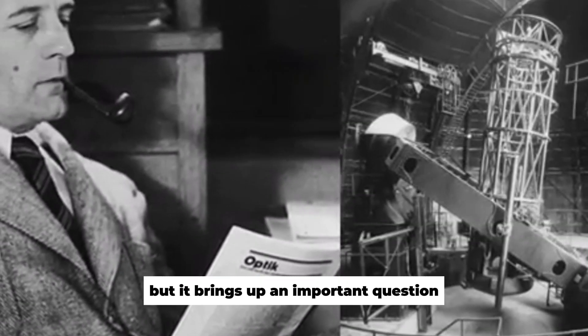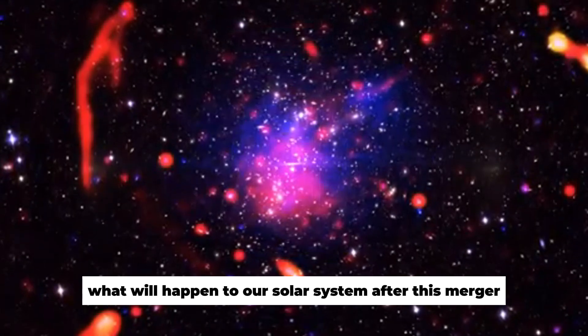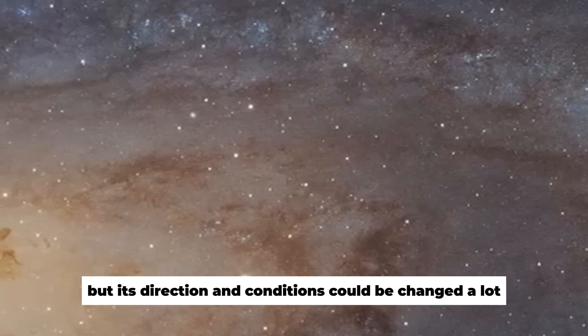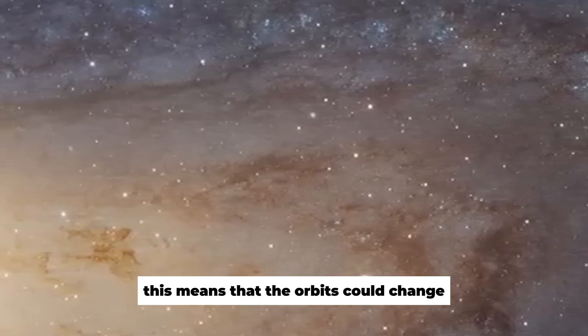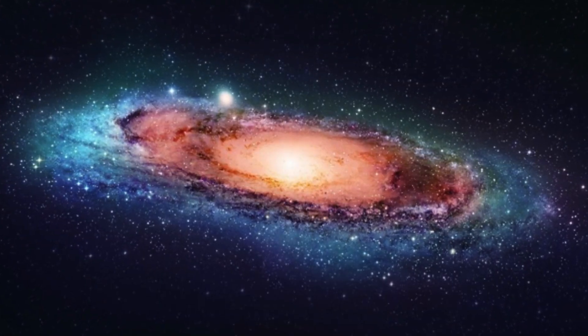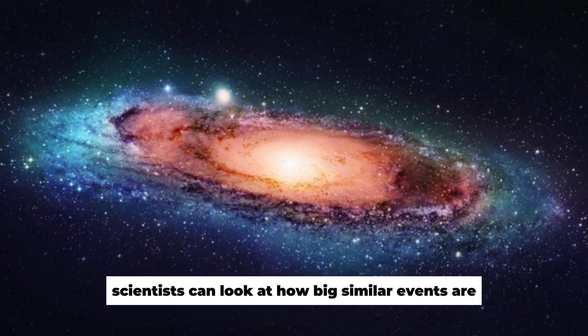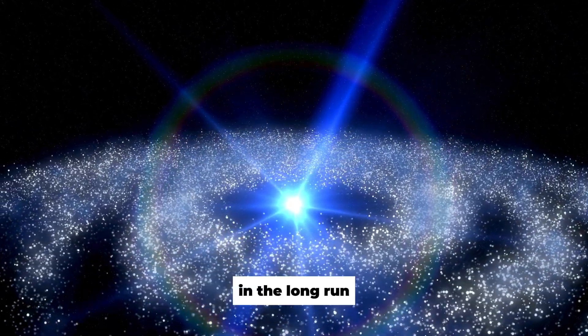This process gives us useful information about how galaxies change over time and how black holes impact this change. But it brings up an important question. What will happen to our solar system after this merger? The solar system would not be completely destroyed, but its direction and conditions could be changed a lot. This means that the orbits could change or even be ejected from the newly formed galaxy.